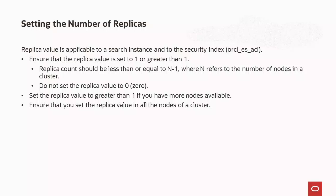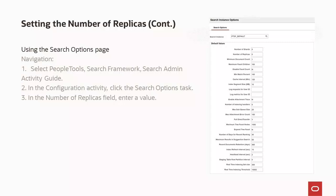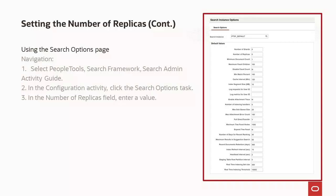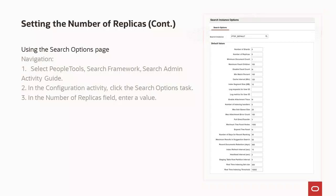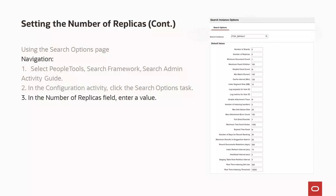Replica count should be less than or equal to n minus 1, where n refers to the number of nodes in a cluster. You may set the replica value to greater than 1 if you have more nodes available. For example, if you have four nodes in a cluster and you want to provide high availability even if two nodes fail, set the replica value to 2. If the replica value for an index is greater than n minus 1, you may find that the status of the cluster is yellow, indicating a warning that at least one replica is missing. To navigate to the search options page, select PeopleTools > Search Framework > Search Admin Activity Guide, click the search options task, and enter a value in the number of replicas field. With these steps, we have completed the integration of OpenSearch with the PeopleSoft application.